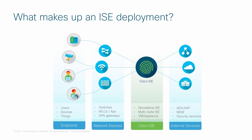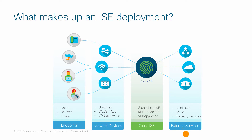So what makes up an ICE deployment? These four components make up an ICE deployment: the endpoints that want to connect to the network, the network devices that gate the access, ICE itself, which determines who should get what level of access, and the external identity sources that ICE resolves identity from.